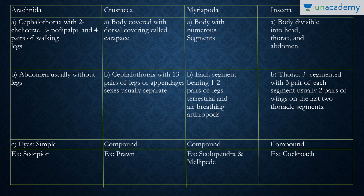The eyes in Arachnida are simple, compared to the other classes which have compound eyes. The example to remember is the scorpion. In Crustacea, the body is covered with a dorsal covering known as a carapace. The cephalothorax has 13 pairs of legs or appendages. They have compound eyes, and the most important example is the prawn.